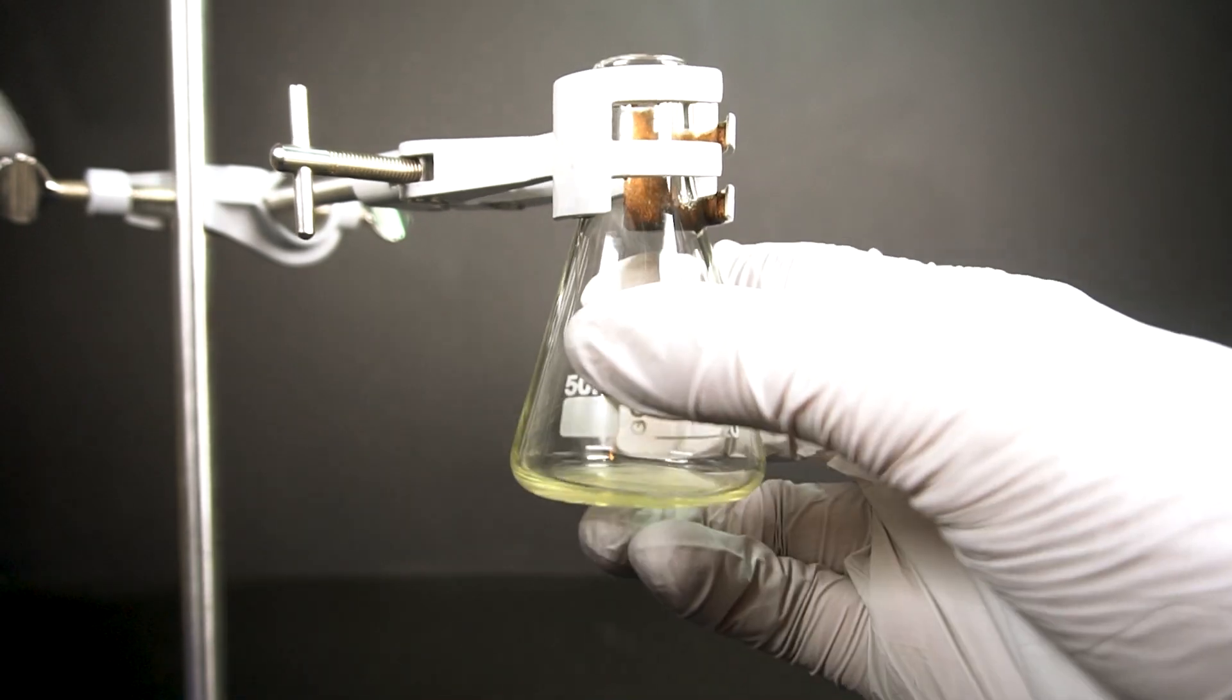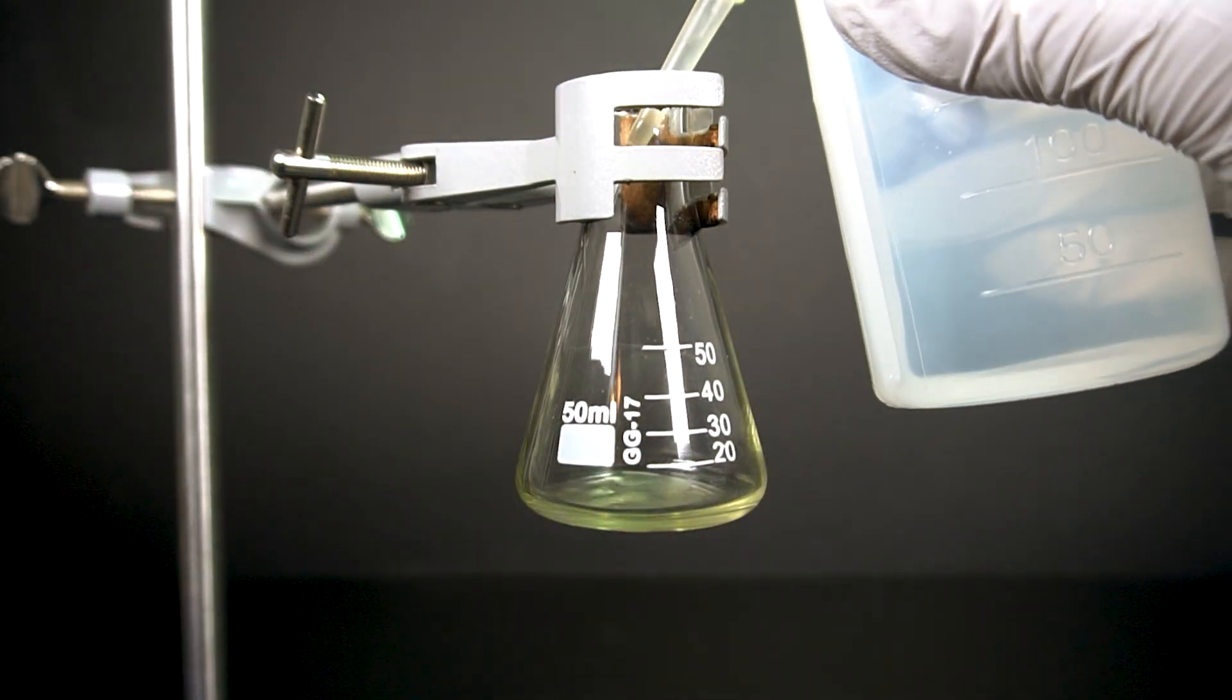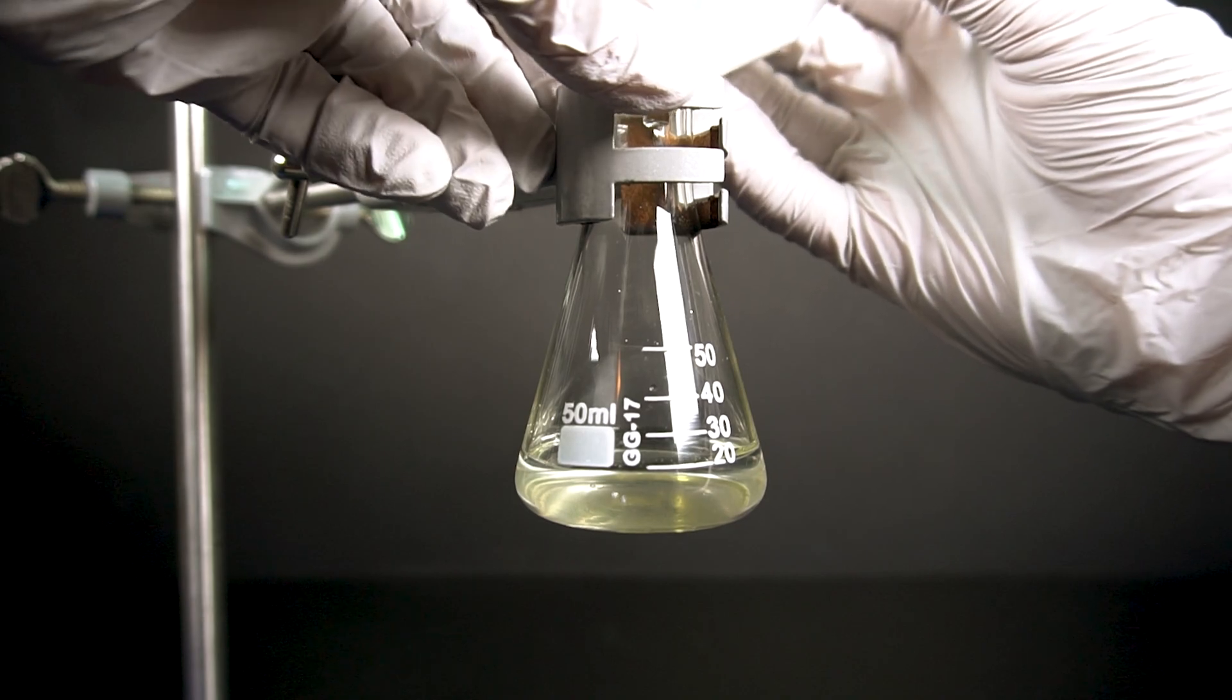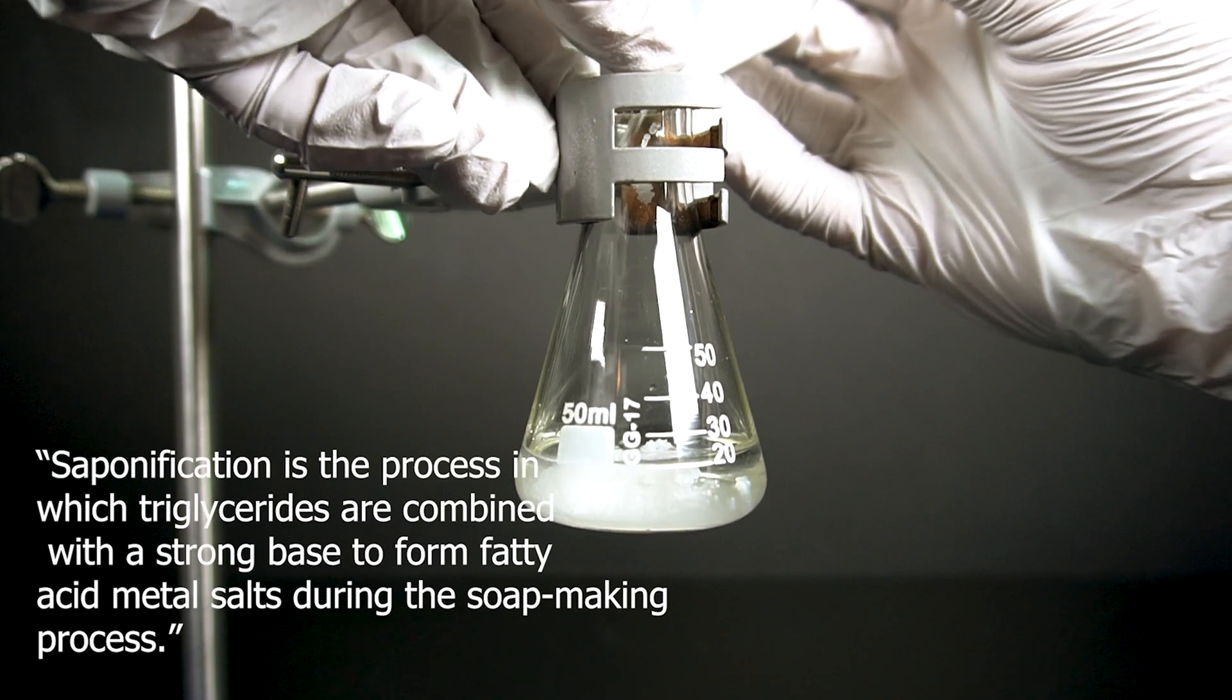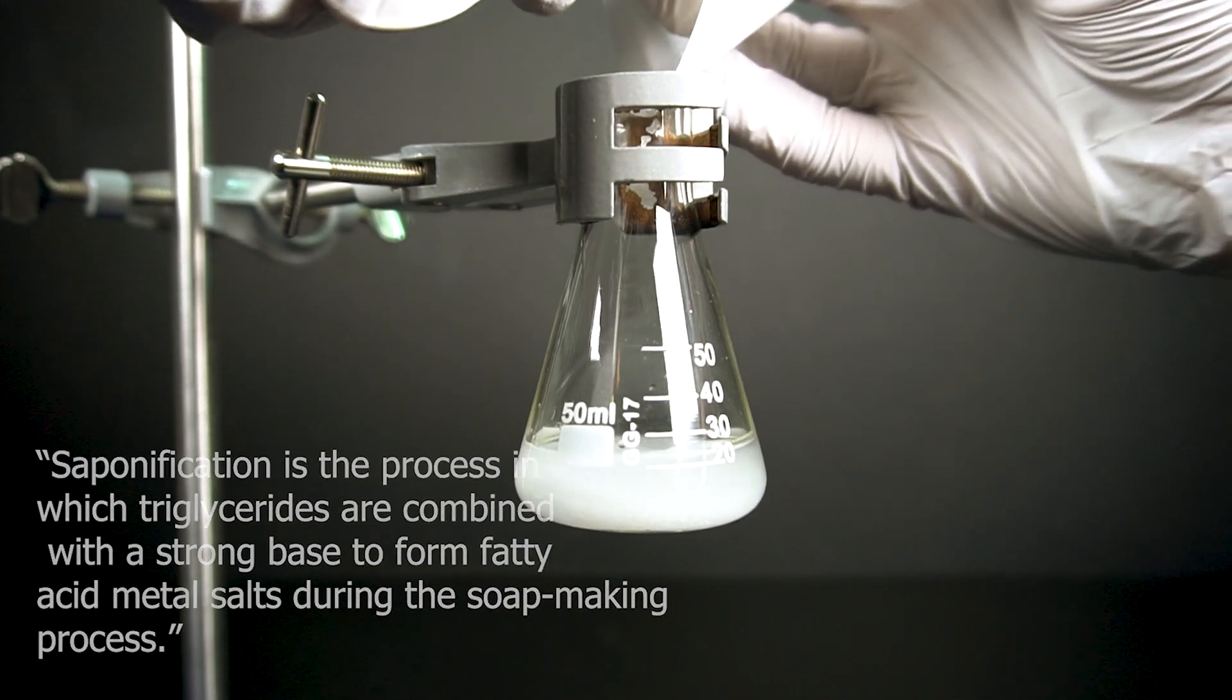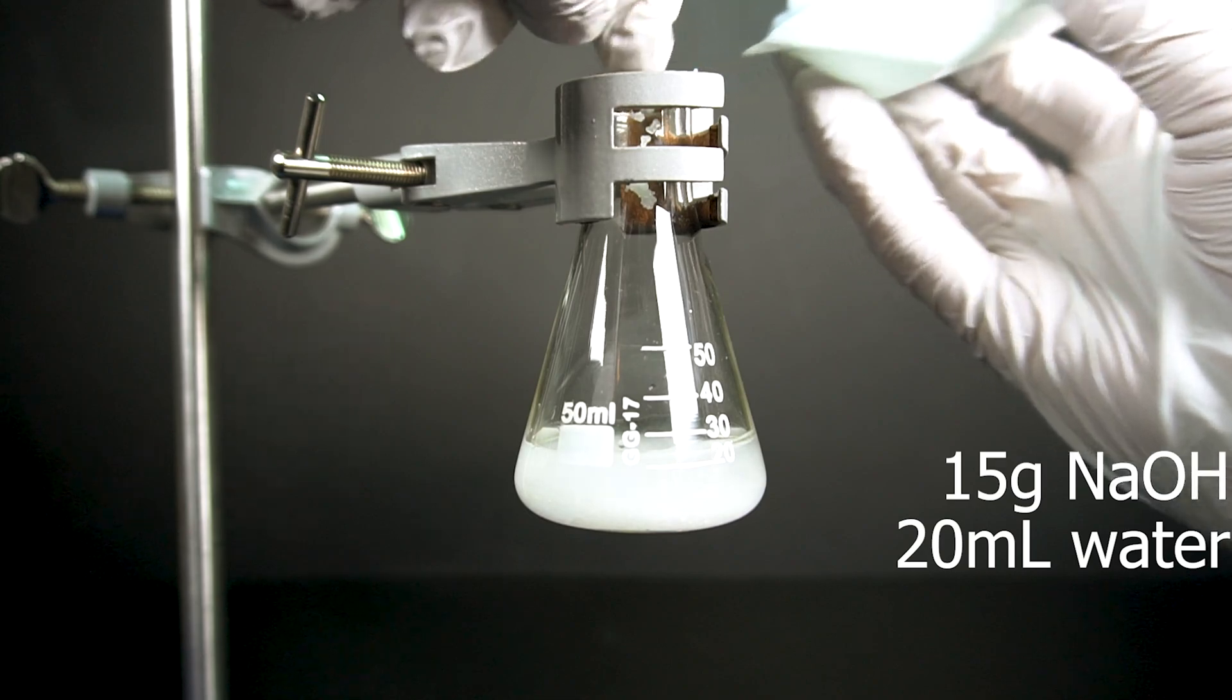The next part of the project is where things get kind of dangerous. I make an 18 molar solution of sodium hydroxide. Sodium hydroxide can cause severe burns and damage to any skin it comes into contact with. Getting drops of this strength of sodium hydroxide will instantly start turning tissues into soap through a process called saponification. To make this, I add about 15 grams of sodium hydroxide into 20 milliliters of distilled water.